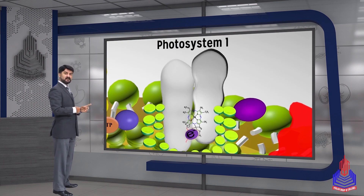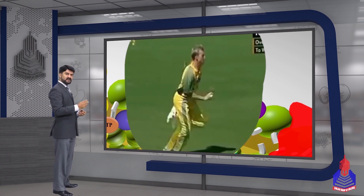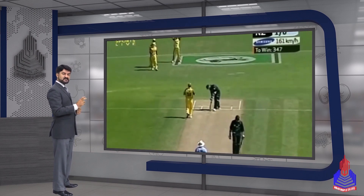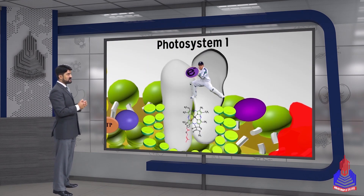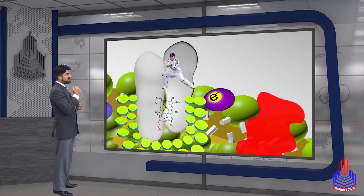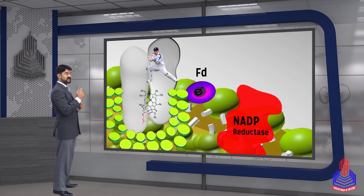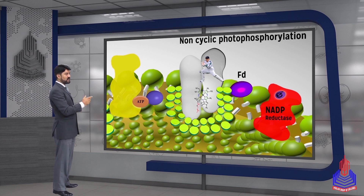Photosystem 1 was discovered before the sequence — but named later. Now the ball is in the hands of the next player, who is also doing the same thing — accelerating the electron. The electron is accepted by the electron acceptor in Photosystem 1. Then there is the addition of ferredoxin in the electron transport chain. Ferredoxin is going to give the electron to NADP. If the electron goes to NADP, it is called non-cyclic phosphorylation.